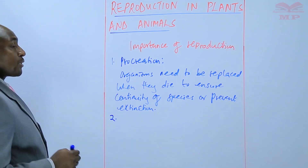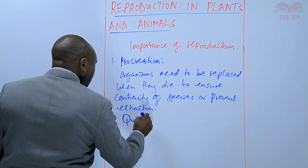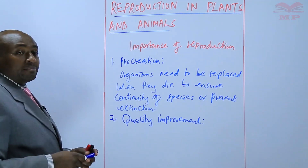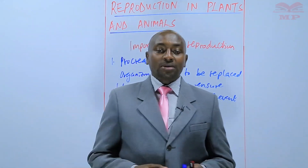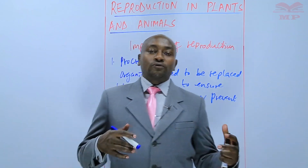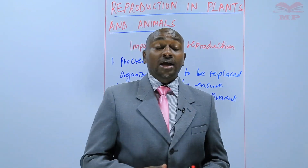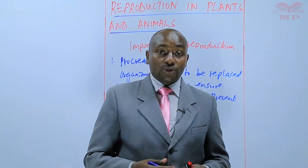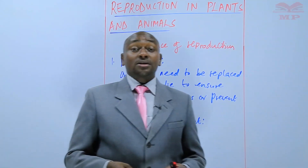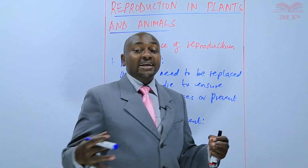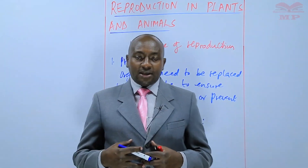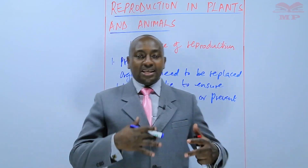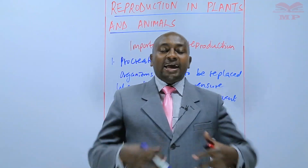Number two, reproduction is also important for quality improvement. Once organisms have been formed, they are faced with a lot of environmental challenges. It is important that these organisms become adapted to these challenges so that their survival is not compromised. Reproduction ensures that there is mixing of genetic material between different organisms of the same species to ensure that there are variations — new varieties being made. Those variations enhance adaptability.